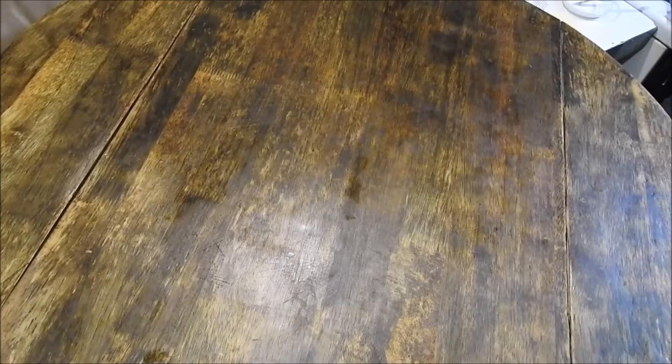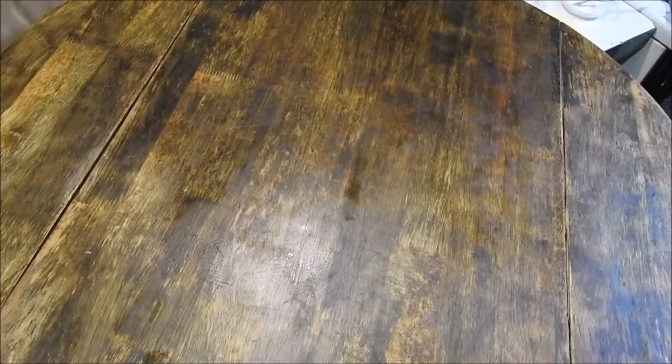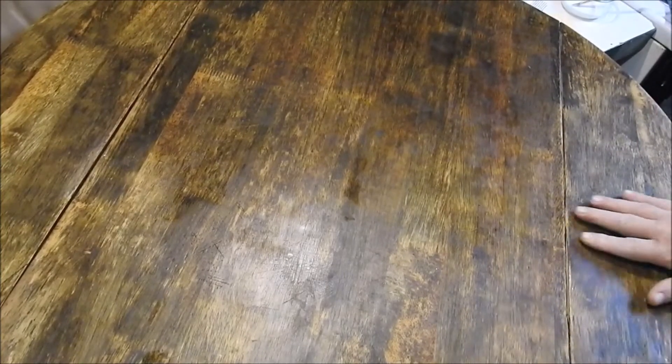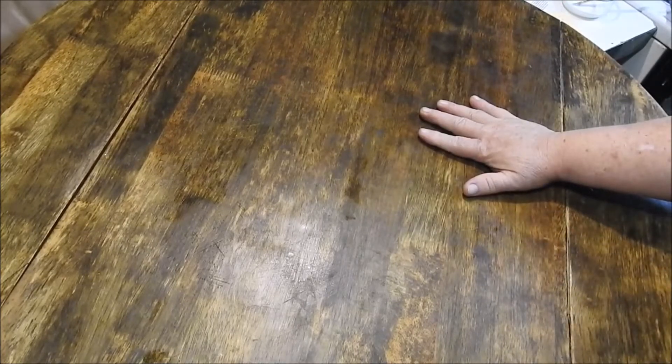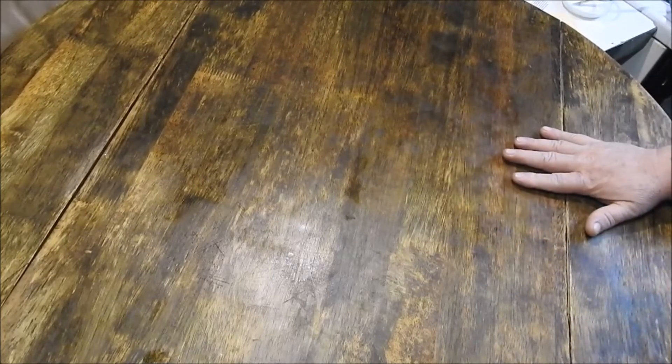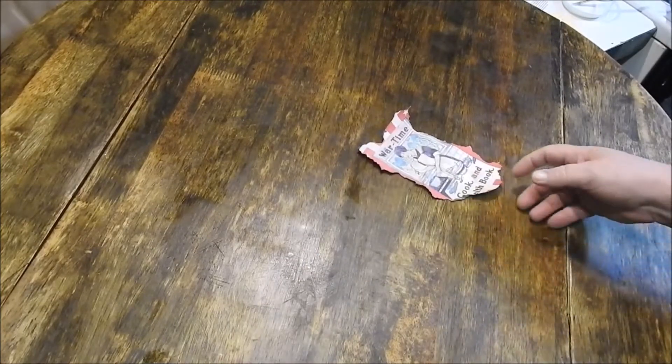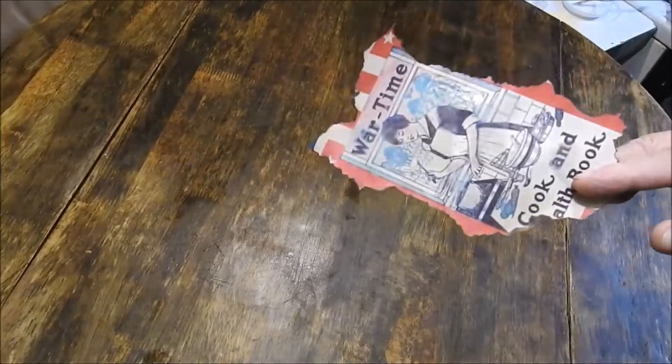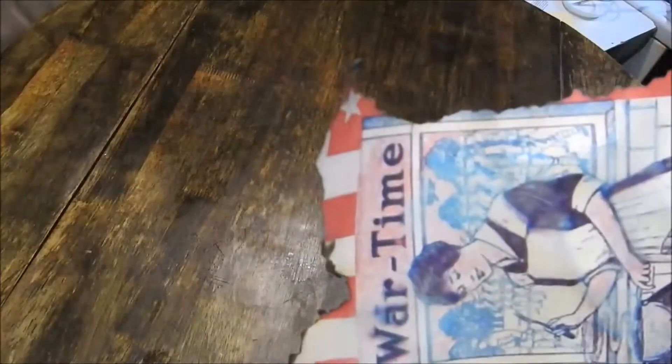Here's the table. It's been washed down real good with Dawn dishwashing soap to get anything loose off of that. Now what I've done is I've gathered and printed out a bunch of cookbook covers and then I burned the edges of them.